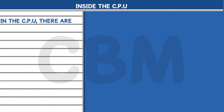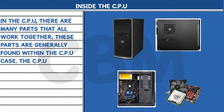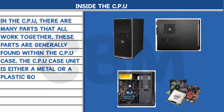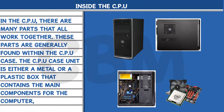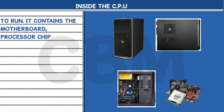Inside the CPU, there are many parts that all work together. These parts are generally found within the CPU case. The CPU case unit is either a metal or plastic box that contains the main components for the computer to run. It contains the motherboard, processor chip, memory unit, power supply, and more.